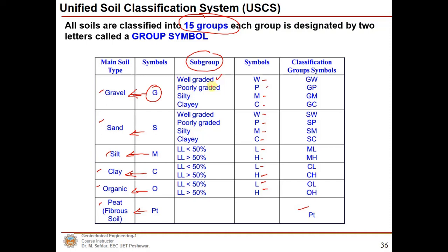There are subgroups based upon the behavior of the soil — for example, well-graded, poorly-graded, silty, or clayey. If you have liquid limit information greater than or less than 50 percent, further symbols are used. Well-graded is represented by W, and the predominant particle size is the first symbol. For example, GW means well-graded gravel, GP is poorly-graded gravel, and there are also silty gravel and clayey gravel designations.